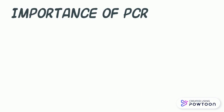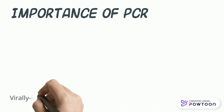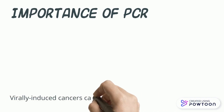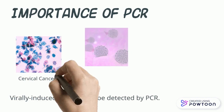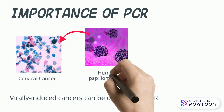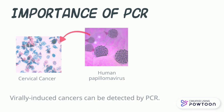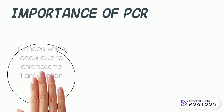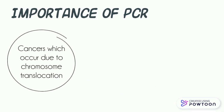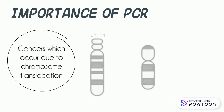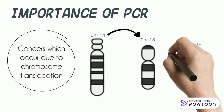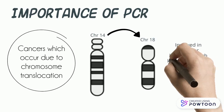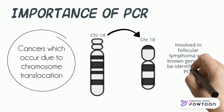Several virally induced cancers, for example, cervical cancer caused by human papilloma virus, can be detected by PCR. Further, some cancers which occur due to chromosomal translocation, such as chromosome 14 and 18 in follicular lymphoma involving known genes, can be identified by PCR.